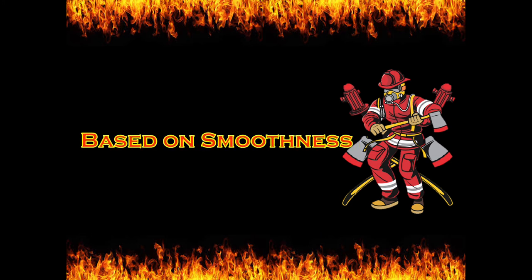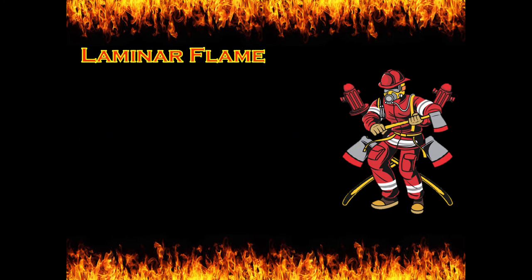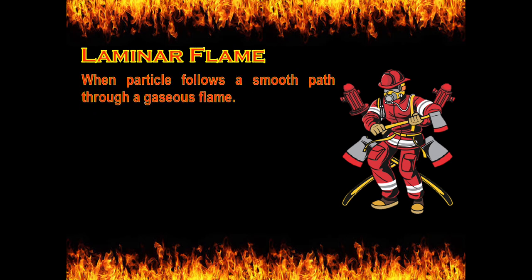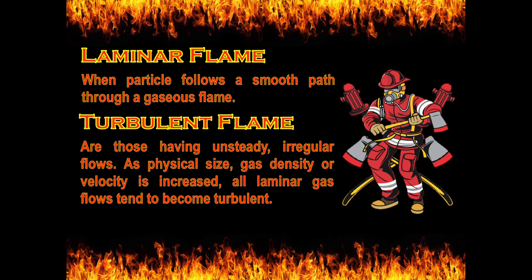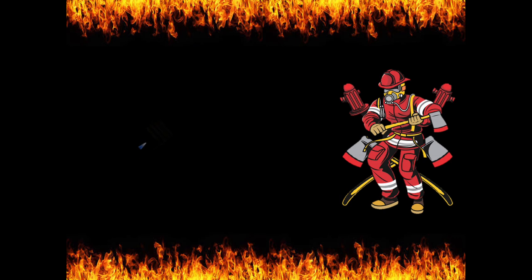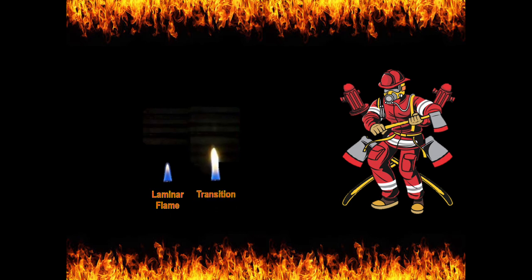Based on smoothness: laminar flame is when a particle follows a smooth path through a gaseous flame. Turbulent flame has unsteady, irregular flows as physical size, gas density, or velocity is increased — all laminar gas flows tend to become turbulent. An example of a laminar flame is straight and smooth, while the transition to turbulent flame shows irregular flow.